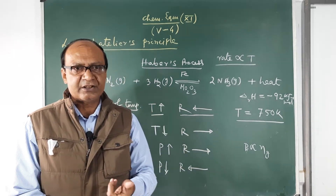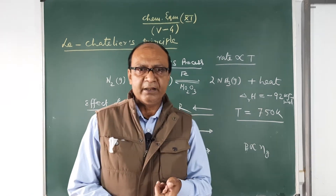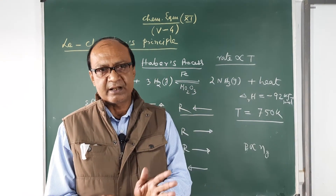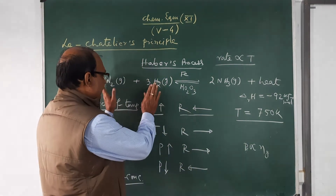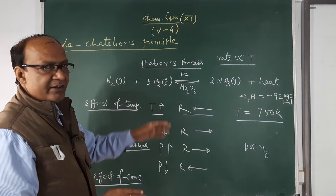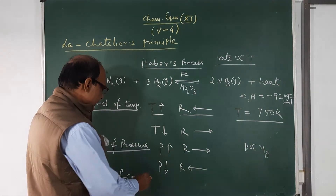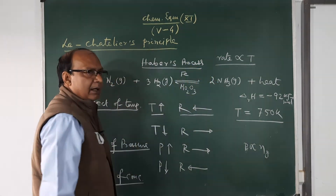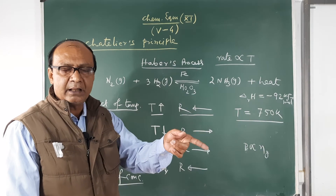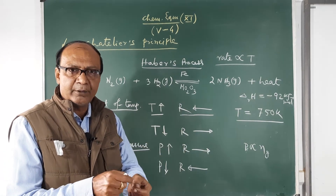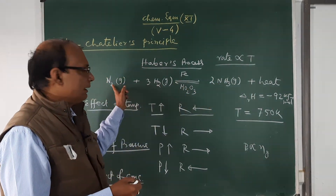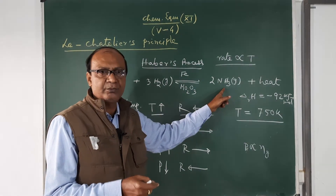According to Le Chatelier's Principle, the system tries to relieve the stress applied to it. So adding nitrogen and hydrogen makes the reaction favor the forward direction so the added reactants can be consumed. Conversely, if you add ammonia to the system after equilibrium — injecting it through a pipe — the reaction will favor the backward direction, so that it can consume the added ammonia.